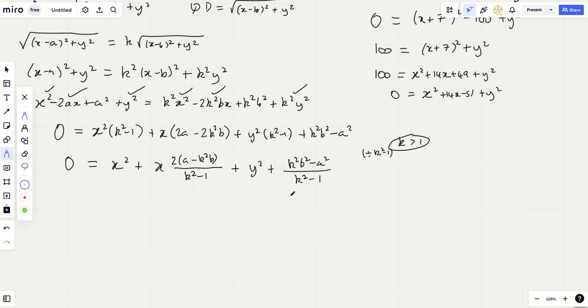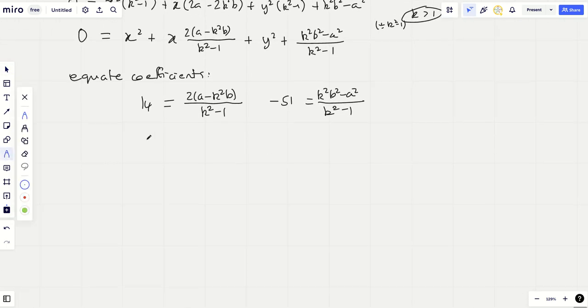So I'm going to multiply out x²-2ax+a² plus y² equals k²x². You'd have -2bx times by k², so -2k²bx plus k²b² plus k²y². Then I'm going to put all the x terms together and all the y terms together. So I'm going to put a big zero on this side. I'm going to get x² multiplied by (k²-1). Then I'm going to have plus x times, I'm actually going to leave some of the common factors in here just so I can see it clearly.